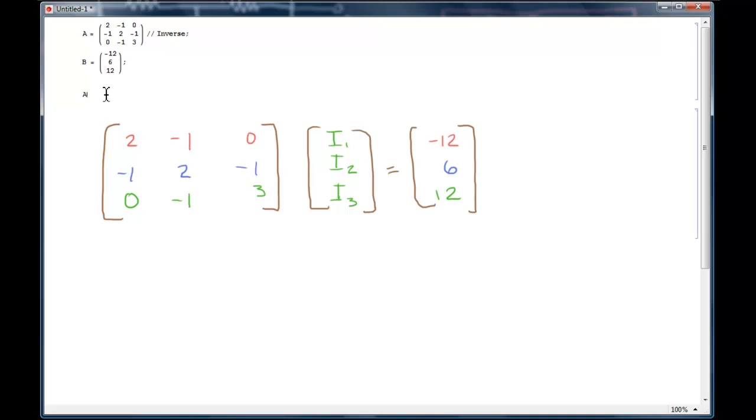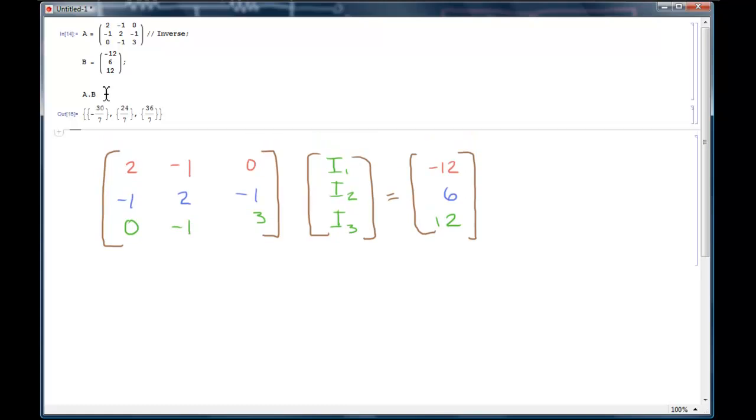What I want to do is compute the dot product. So to do that, you just type A period B and it will compute the dot product for you when you hit Shift Enter. That is giving us in the order I1, I2, I3 the values for I1, I2, and I3 in this equation.